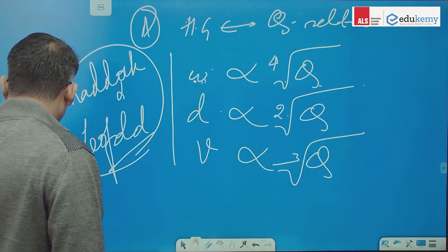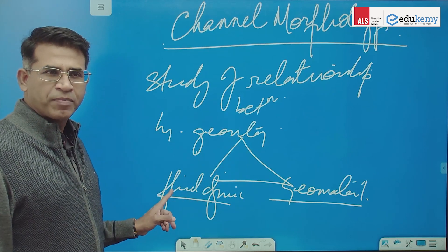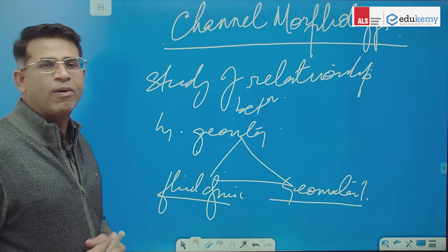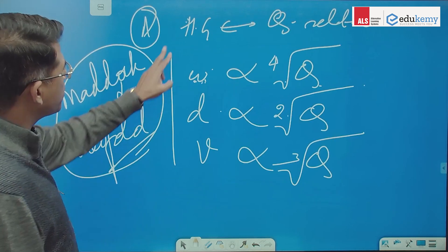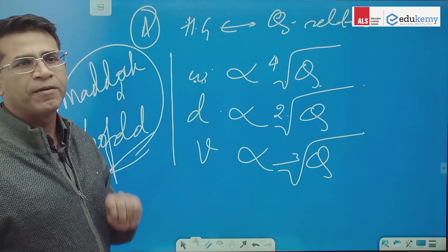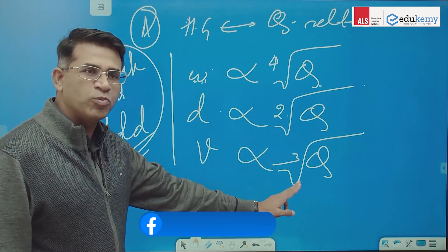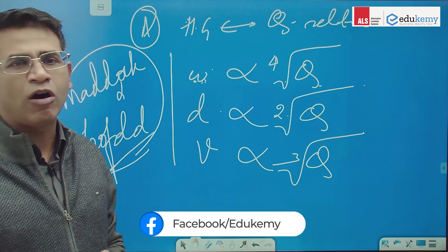This is what is channel morphology, the relationship of three things. And I'll take up one by one how they are related. So in the first relationship we have this. You don't have to do anything, you just have to remember it. Depth is square root, velocity is cube root, and width is fourth root of discharge.